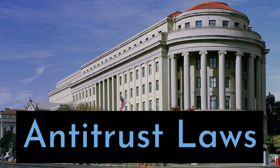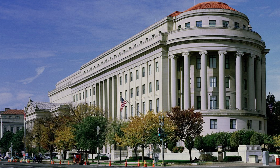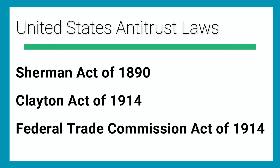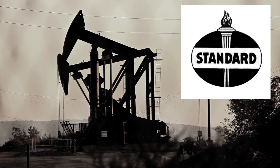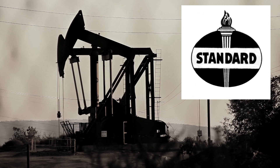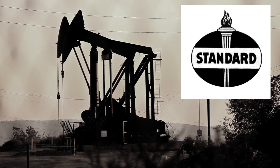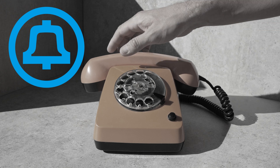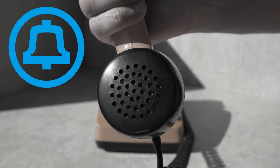Since monopolies prevent a free market from taking place, there are antitrust laws established to assess, prevent, and break up monopolies. The three primary antitrust laws are the Sherman Act of 1890, the Clayton Act of 1914, and the Federal Trade Commission Act of 1914. Two of the largest antitrust breakups in U.S. history were Standard Oil and the Bell Company, which had a monopoly over telecom.